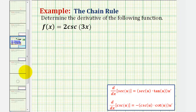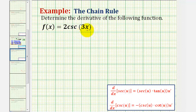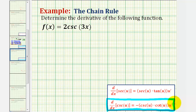Let's take a look at a second example. Here we have f of x equals two cosecant three x, and we want to find f prime of x. Again, we have a composite function where the inner function is three x, so we'll have to apply the chain rule. Our derivative formula has the chain rule built in, where the inner function is u. The derivative of cosecant u with respect to x is equal to negative cosecant u times cotangent u times u prime.